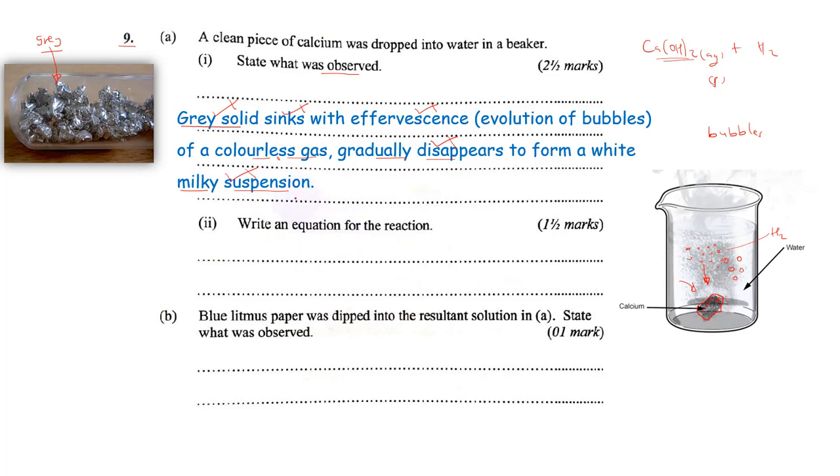Write the equation for the reaction. So calcium is a solid which was gray in our previous part one. It reacts with water to form our calcium hydroxide and hydrogen gas. Then we have to balance it with a two. So this is the equation for the reaction: Ca(s) + 2H₂O(l) → Ca(OH)₂(aq) + H₂(g).